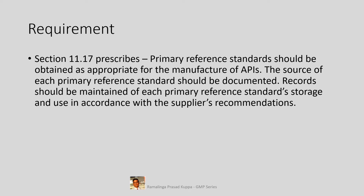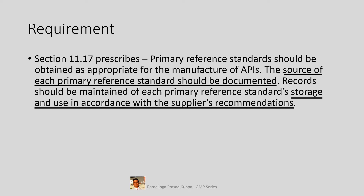Let us see the requirement. Section 11.17 of ICH Q7 prescribes that primary reference standards should be obtained as appropriate for the manufacture of APIs. The source of each primary reference standard should be documented. Records should be maintained of each primary reference standard's storage and usage in accordance with the supplier's recommendations. It is necessary to have primary standards in the QC Laboratory for testing and release of materials during manufacturing, and the source of such standards has to be documented fully.